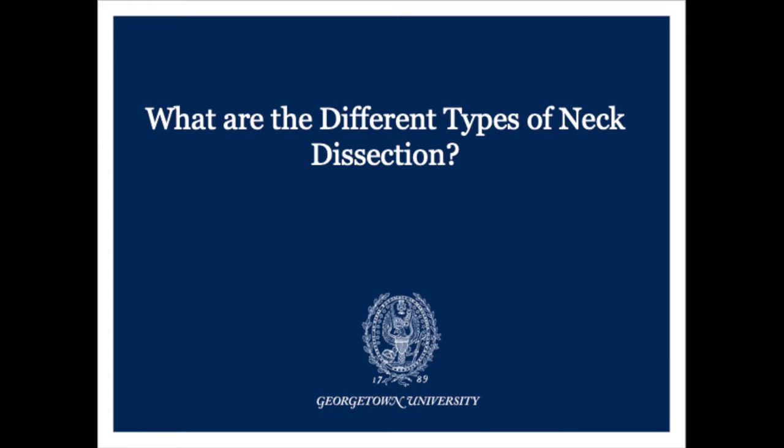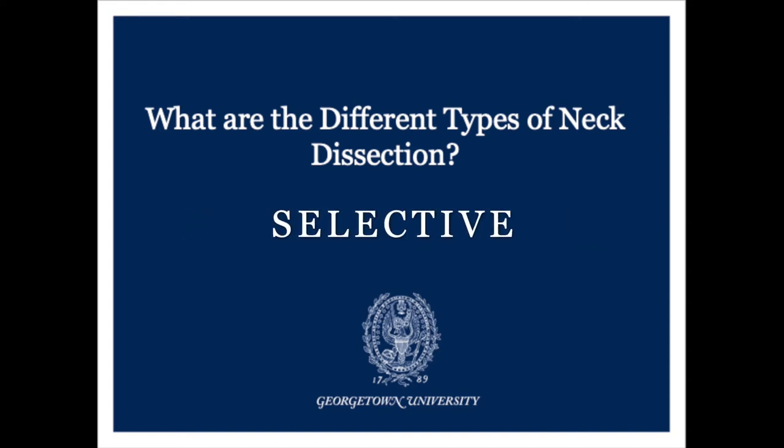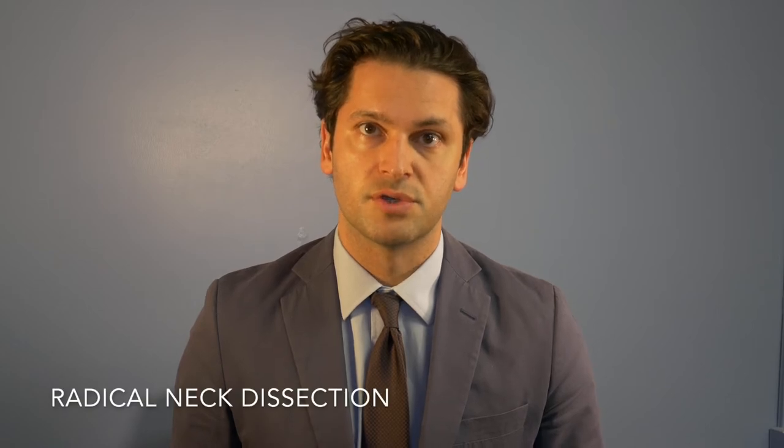There are three different types of neck dissection: radical, modified radical, and selective neck dissection. Radical neck dissection refers to the original surgery which was popularized by pioneering surgeon Dr. George Washington Crowell over 100 years ago, and for much of the 20th century, radical neck dissection was the standard procedure for all lymph node removal in the neck. In a radical neck dissection, all of the lymph nodes in levels 1, 2, 3, 4, and 5 are removed with their fatty tissue.